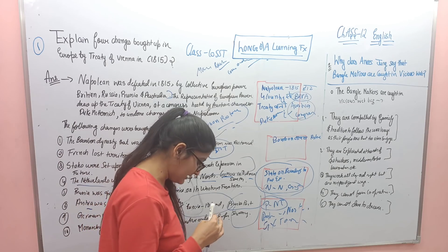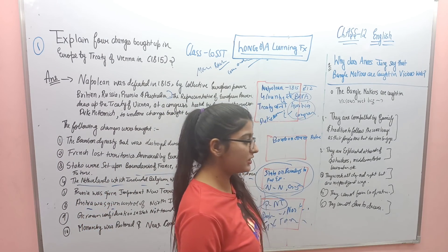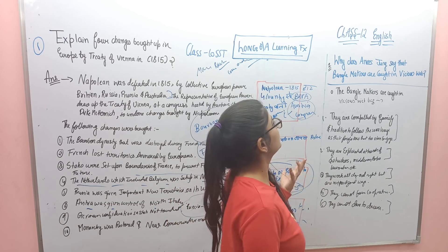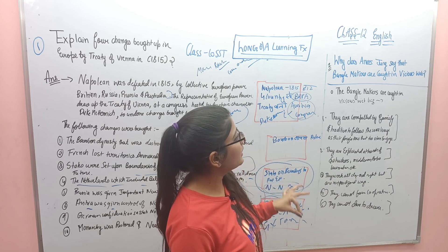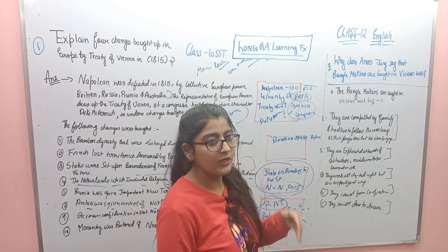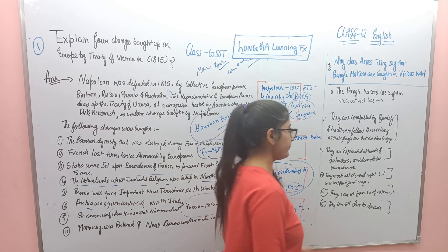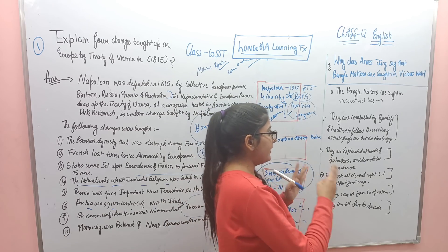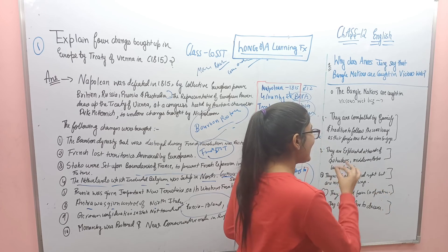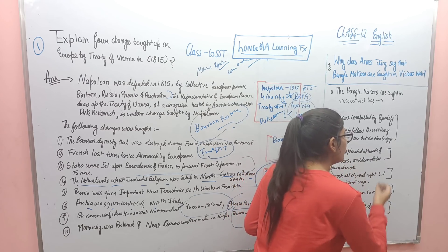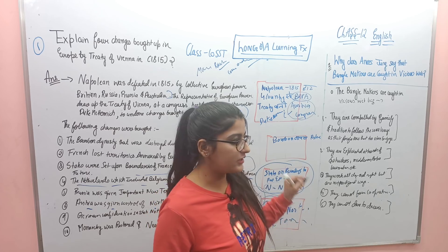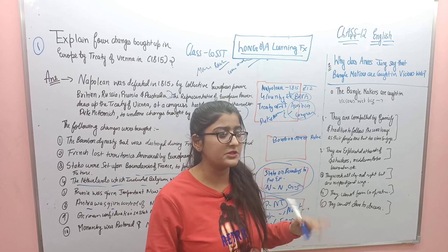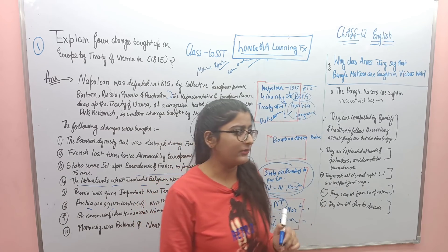Now 12th class students — let's see how to learn the English question. Also, 10th grade students watch too because I won't make another English video. The question is: 'Why does Anees Jung say that bangle makers are caught in a vicious web?' Thik hai — the bangle makers are caught in a vicious web because they are compelled by family and tradition to follow the same lineage as their forefathers, and that too at an early age.